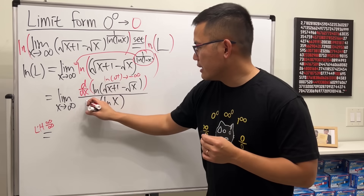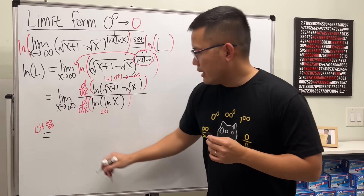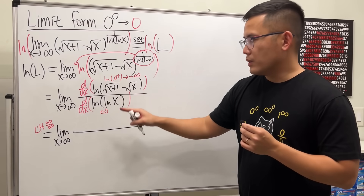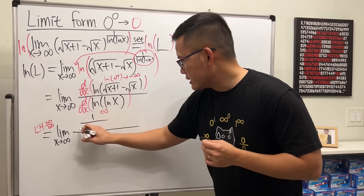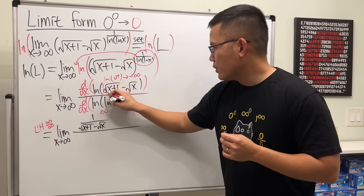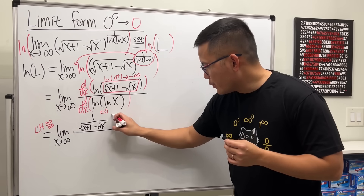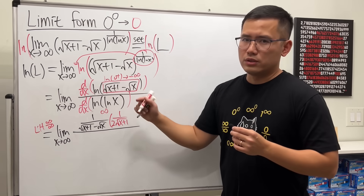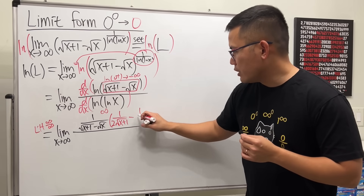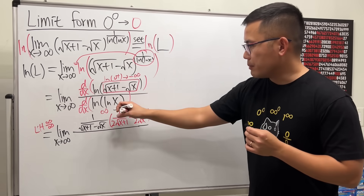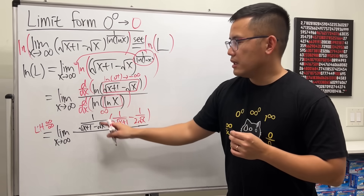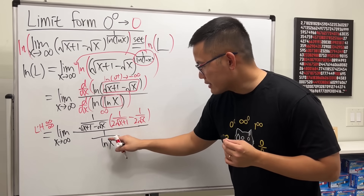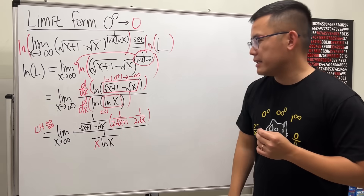Let's go ahead and differentiate the top and then differentiate the bottom. For the limit as x approaching infinity: differentiating the numerator, we get 1 over (square root of x plus 1 minus square root of x), then multiply by the derivative of the inside by chain rule. The derivative of the square root is 1 over 2 times the square root of the inside, and the derivative of x plus 1 is just 1, so that's 1 over 2 square root of x plus 1, minus 1 over 2 square root of x. For the bottom, differentiating ln of ln of x gives 1 over ln of x, then multiply by 1 over x.